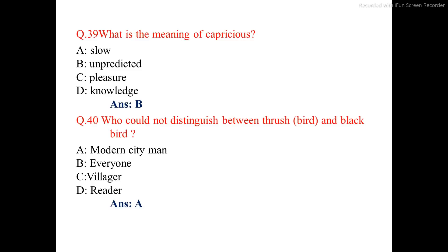Question number 40. Who could not distinguish between thrush and blackbird? The correct answer is option A: modern city man.